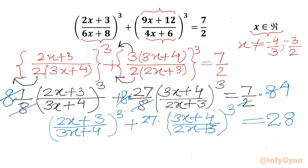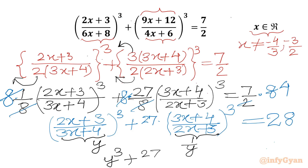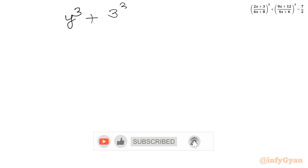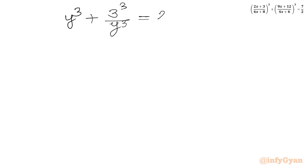Now I will use substitution. Let Y = (2x+3)/(3x+4). Then the reciprocal term becomes 1/Y. So our equation becomes Y³ + 27/Y³ = 28.